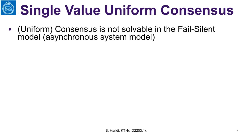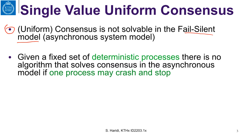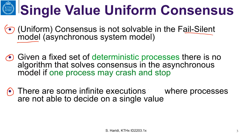First, we know that uniform consensus is not solvable in the fail-silent model — a model that has no failure detectors, which is basically the asynchronous system model. Given a fixed set of deterministic processes that cannot throw dice, there is no algorithm that solves consensus in the asynchronous model if one process may crash and stop. This impossibility result says there are some infinite executions where processes are not able to decide on a single value.